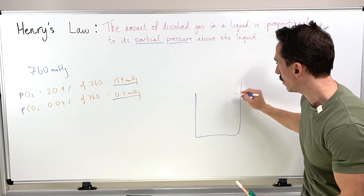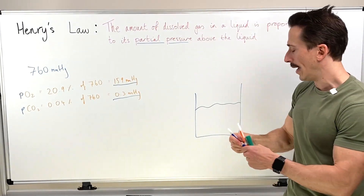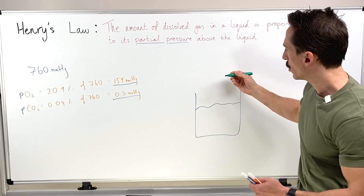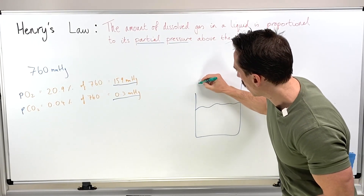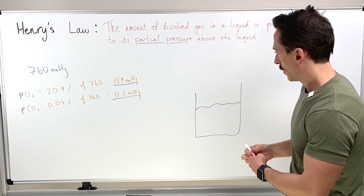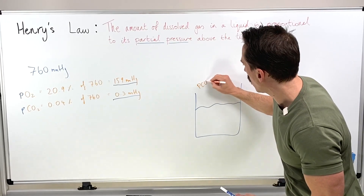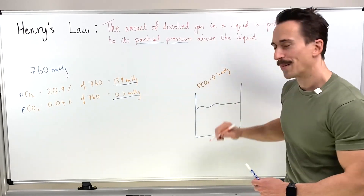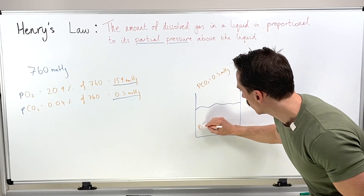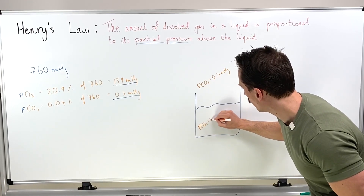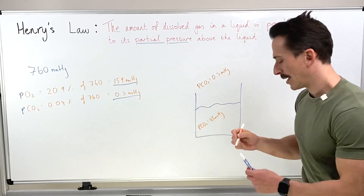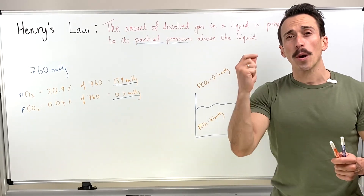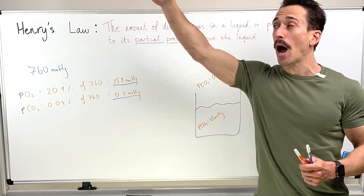Let's draw a container with liquid in it. We know the partial pressure of carbon dioxide outside is 0.3 mmHg. Let's say inside the liquid the PCO2 is 45 millimeters of mercury. This is where partial pressure and Henry's law all come into play — gases will only move down their own pressure gradient, always from high pressure to low.